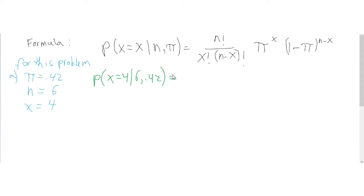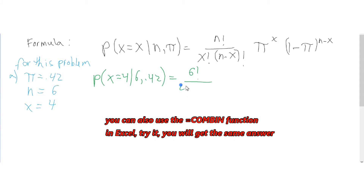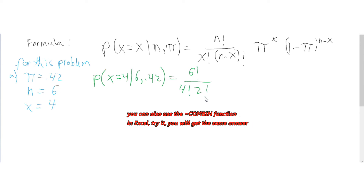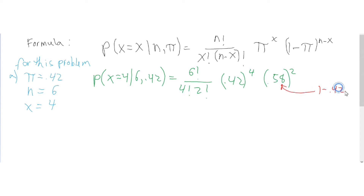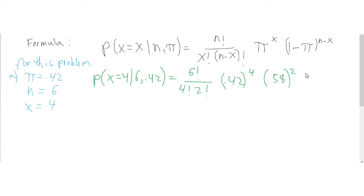That is equal to, using the formula: N factorial over X factorial times N minus X factorial — that's your combination formula. So that is 6 factorial divided by 4 factorial times 2 factorial, times pi to the X power, so 0.42 to the 4th power, times 1 minus pi to the N minus X power. So 1 minus pi is 0.58, and that's 0.58 squared, since N minus X, 6 minus 4, is 2.